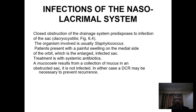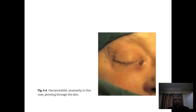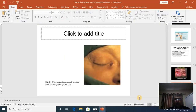Infection of the nasolacrimal system can lead to a mucocele swelling in chronic dacryocystitis. Acute infection may develop on top, causing acute dacryocystitis. Treatment consists of systemic antibiotics until resolution of the acute inflammation; we may drain the lacrimal abscess, and once the infection resolves, we perform DCR for these patients.